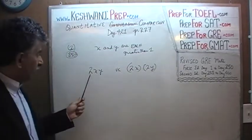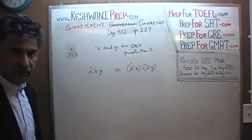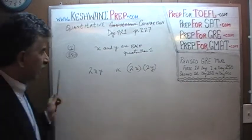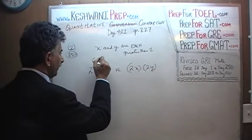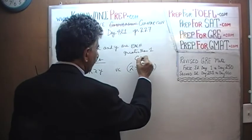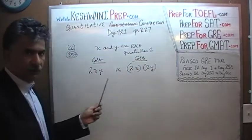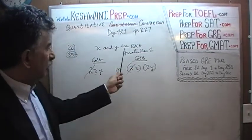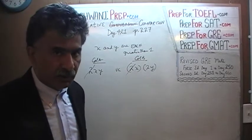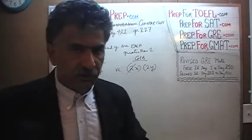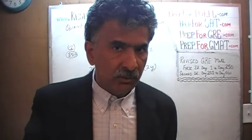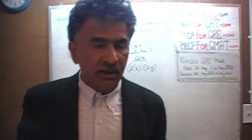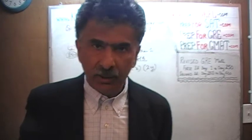Both columns have a factor of 2. We can divide column A and column B by 2, so the 2 drops out. Since x and y are both greater than 1, they are both positive quantities. As long as you are multiplying or dividing both columns by a positive number, you are fine.